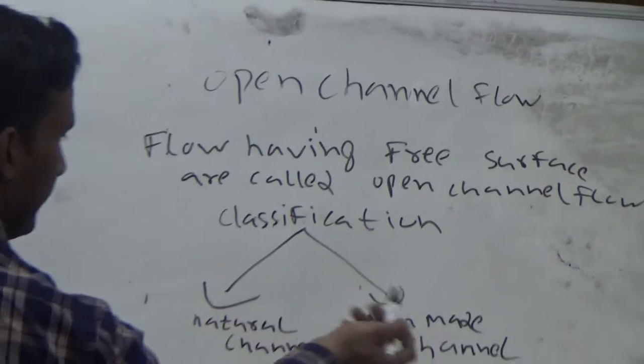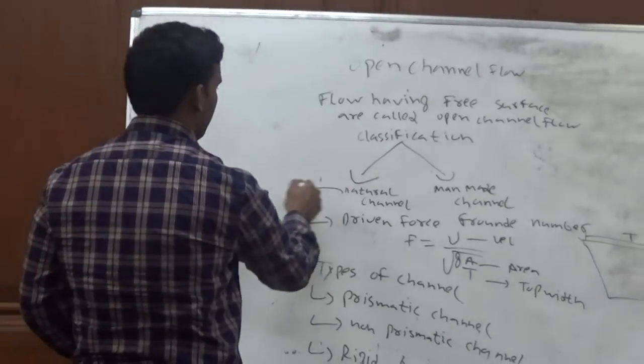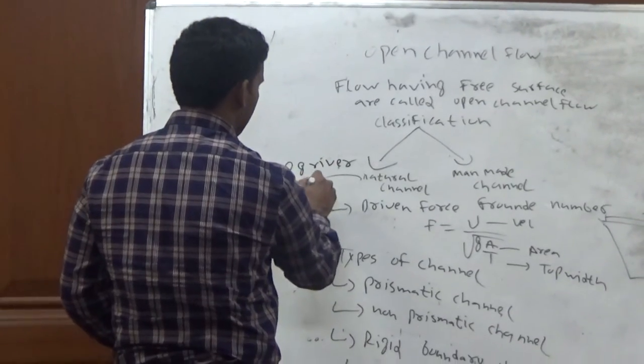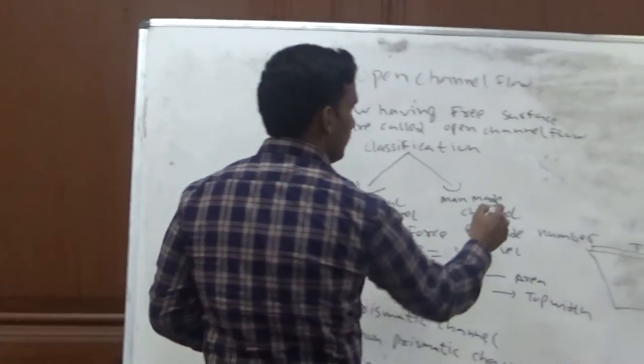This is classified into natural channels and man-made channels. Natural channels are rivers and lakes. Man-made channels are canals.